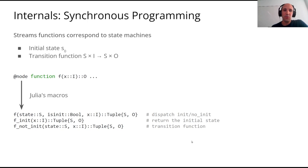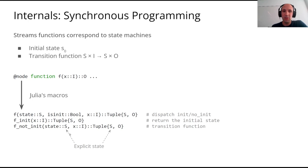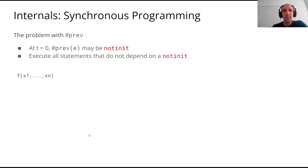This is done with Julia macros. Each time you use the macro node, three different functions are built: the first dispatches between init and not-init; f_init is used only at the beginning when initializing the state; and f_not_init does the streaming once initialization is complete. This transition function takes the state explicitly as an argument and produces an output.